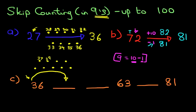37, 38, 39, 40, 41, 42, 43, 44, and 45. That is our answer, 45. The number after 36, if we are counting in nines, is 45.